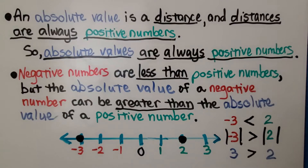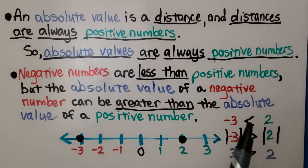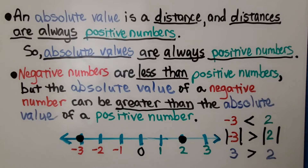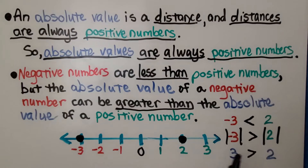Notice that here it says less than, but when we use absolute values, it's now greater than — the sign flipped. The sign won't always flip; it'll only flip if the number is farther from 0, and then it'll be greater than the absolute value of the other number.